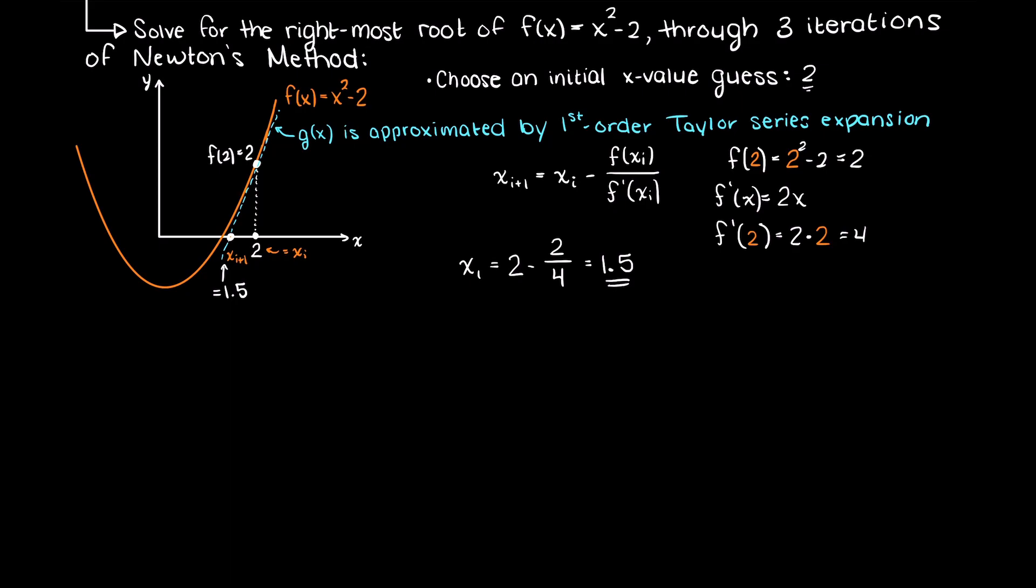So, that means following this tangent line here, we cross the x-axis at 1.5. And that is all we need to do for the first iteration.